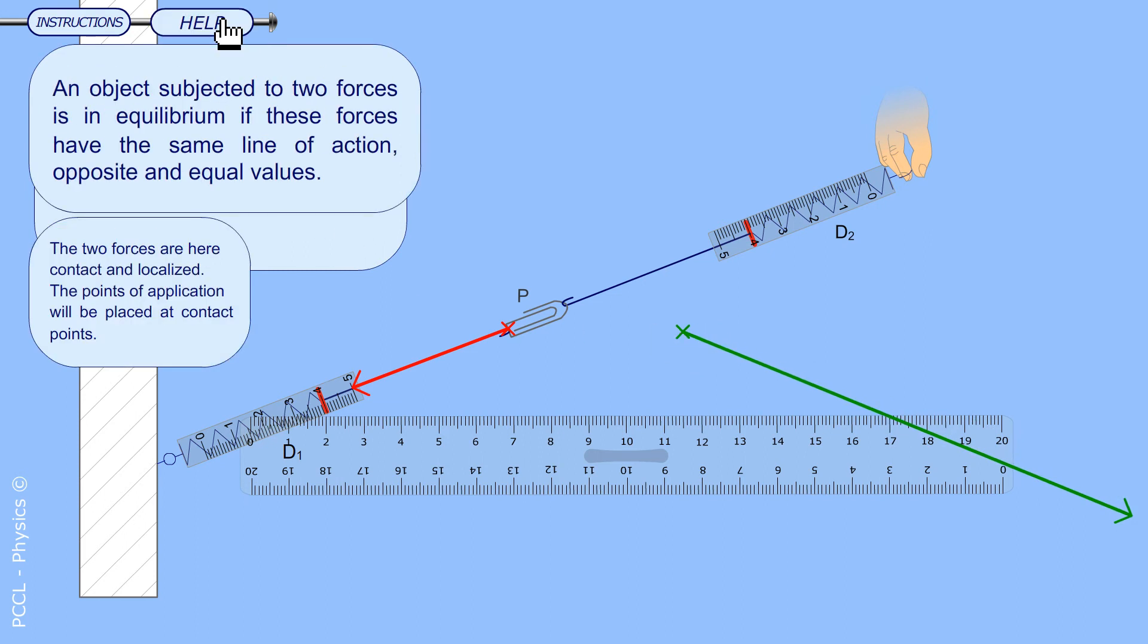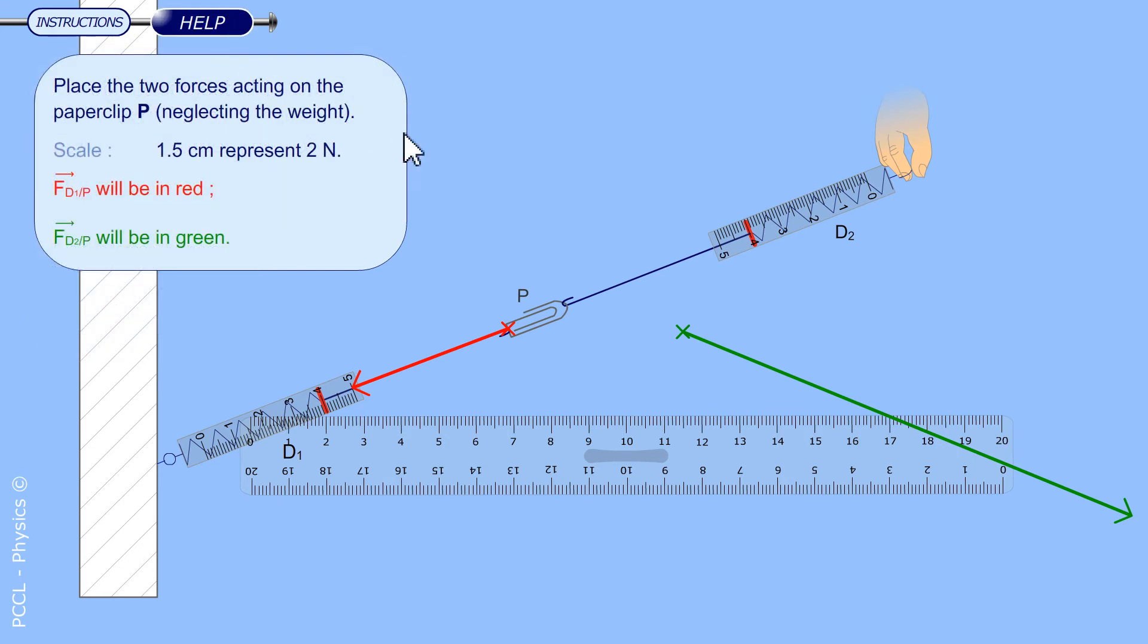Let's look at the help. This object is in equilibrium. If a body subjected to two forces is in equilibrium these forces have the same line of action, opposite directions, and equal magnitudes. So I need two equal and opposite arrows. Don't forget to respect the scale. Two newtons are represented by 1.5 centimeters. Newtons I have four. So that gives three centimeters.